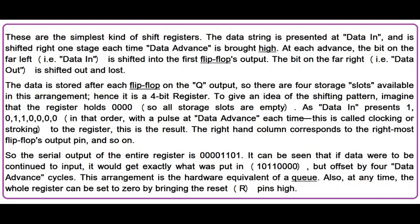These are the simplest kind of shift registers. The data string is presented at data-in and is shifted right one stage each time data advance is brought high. At each advance, the bit on the far left, i.e. data-in, is shifted into the first flip-flop's output. The bit on the far right, i.e. data-out, is shifted out and lost. The data is stored after each flip-flop on the Q output, so there are four storage slots available in this arrangement, hence it is a 4-bit register.